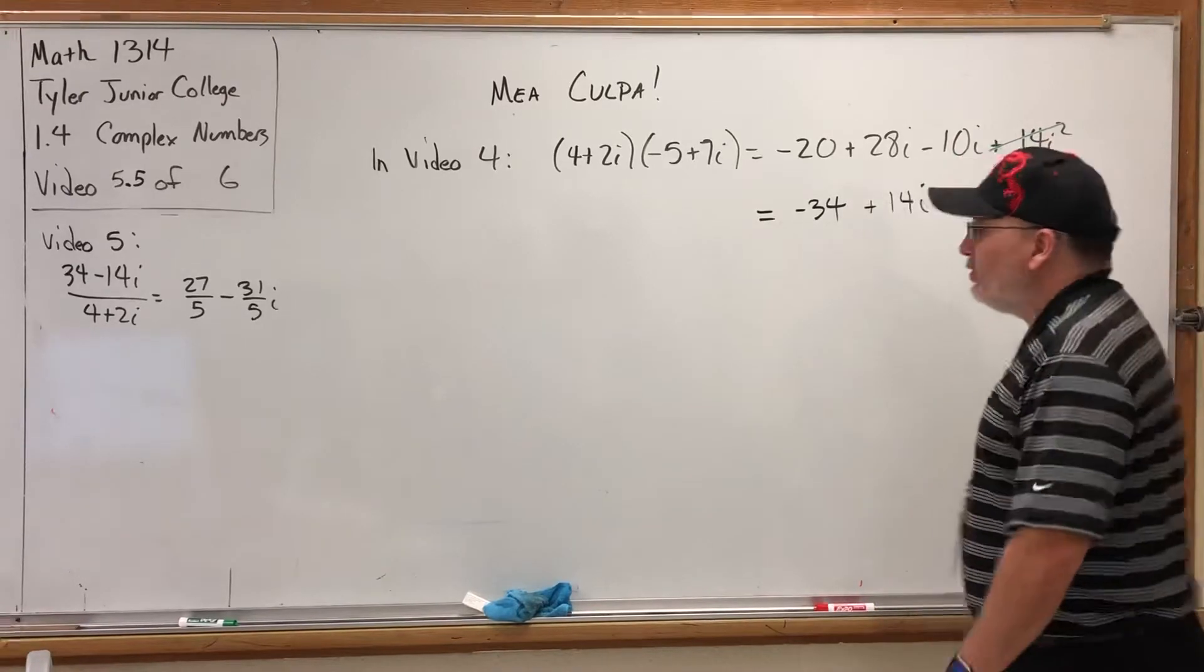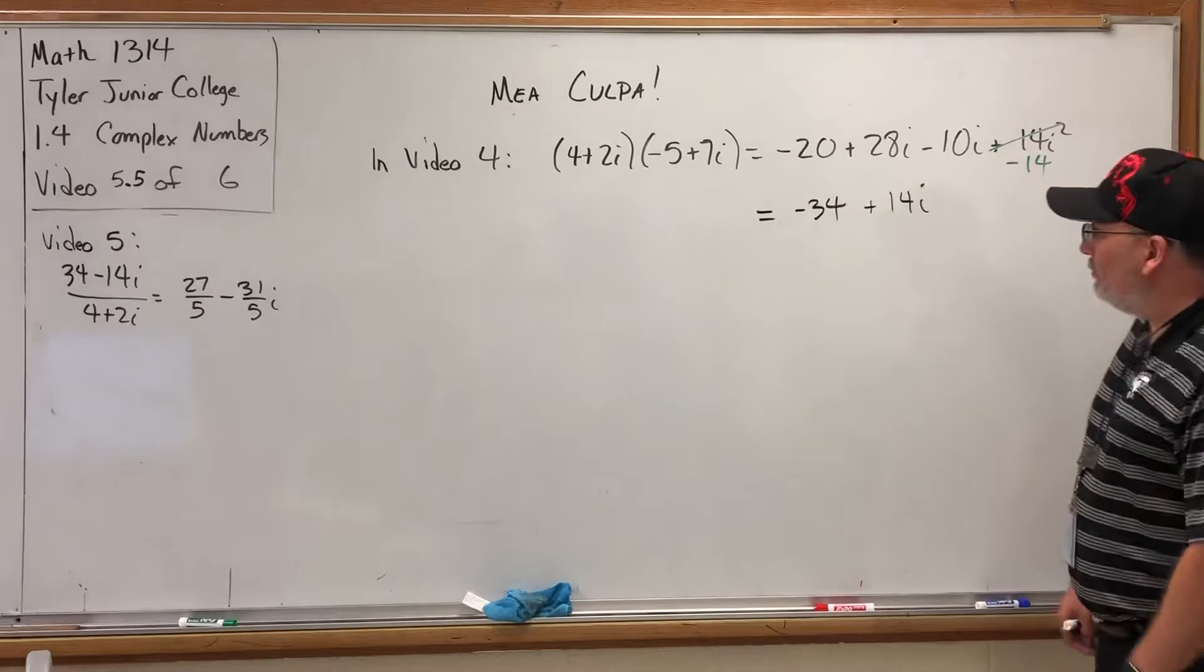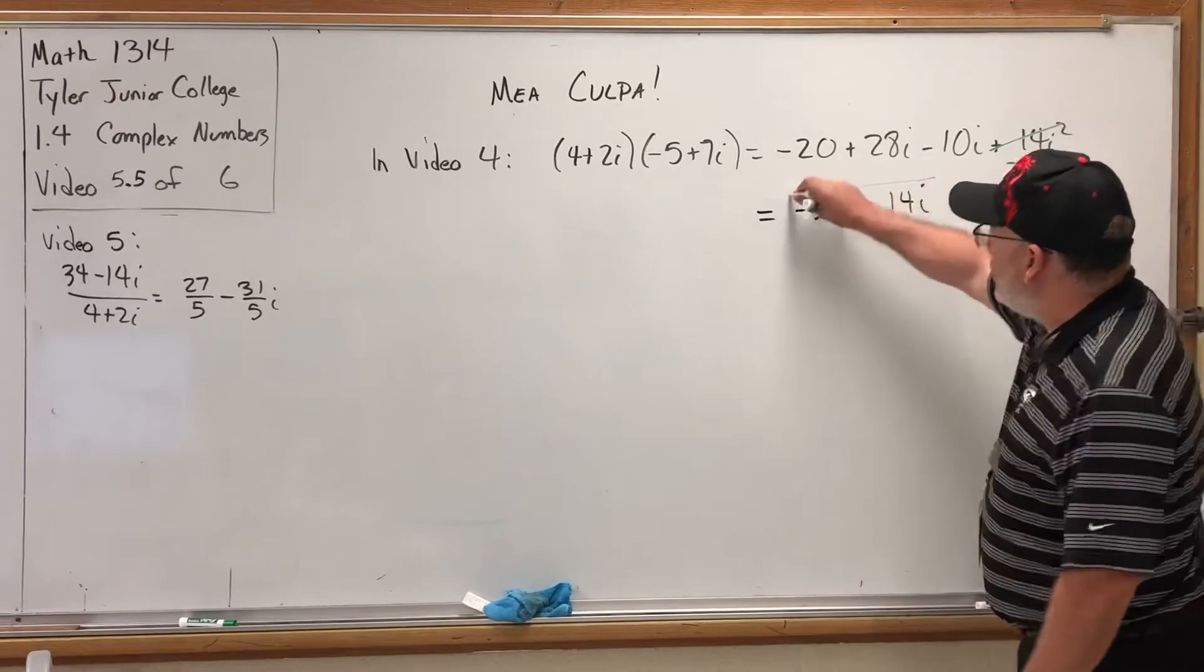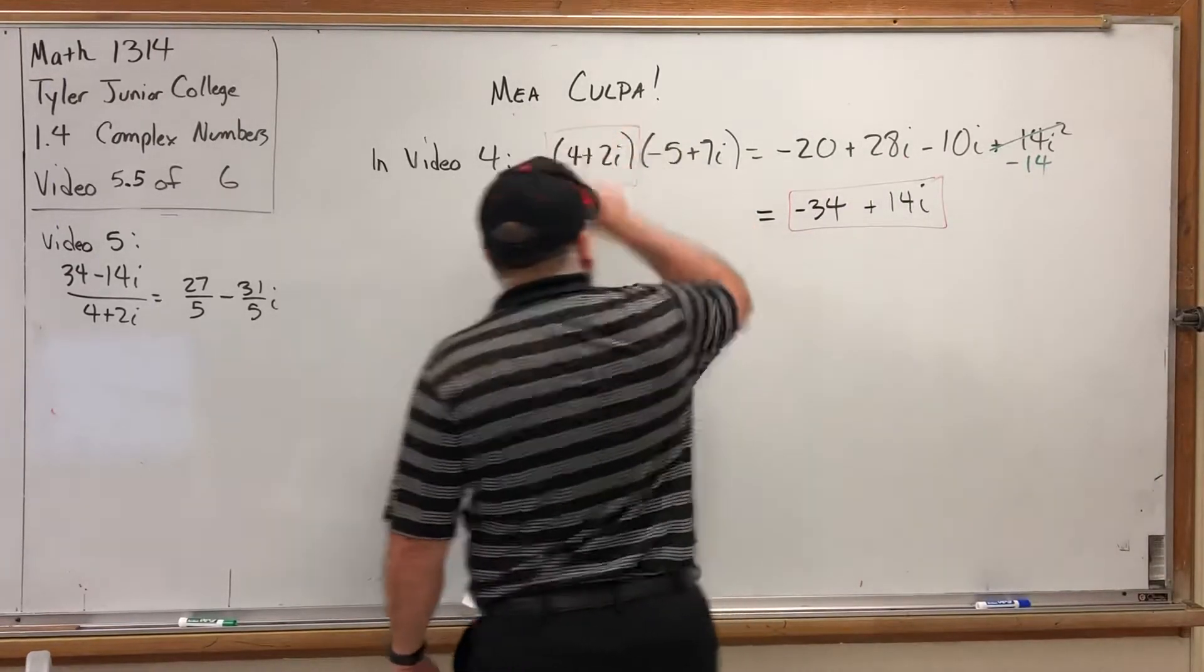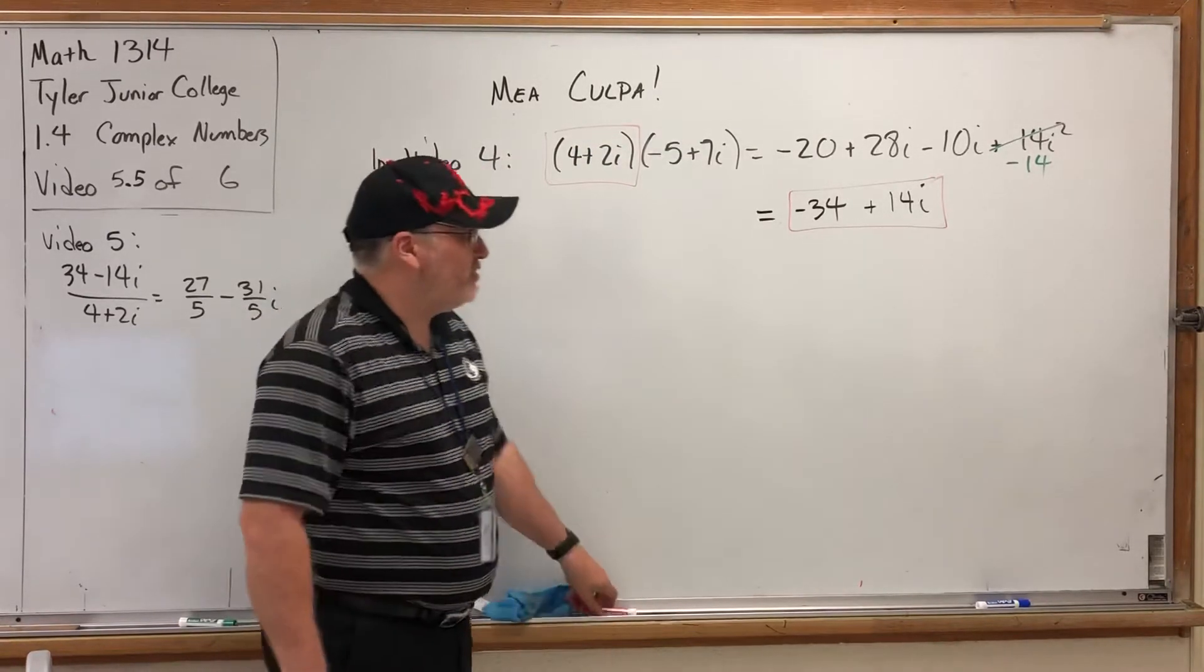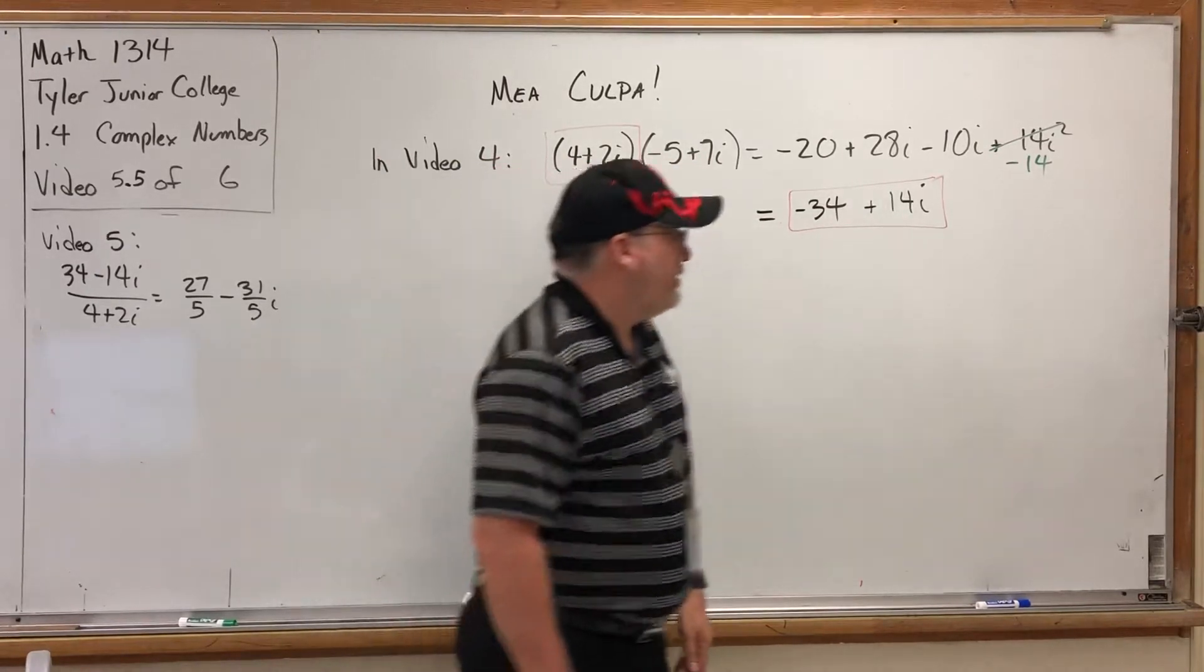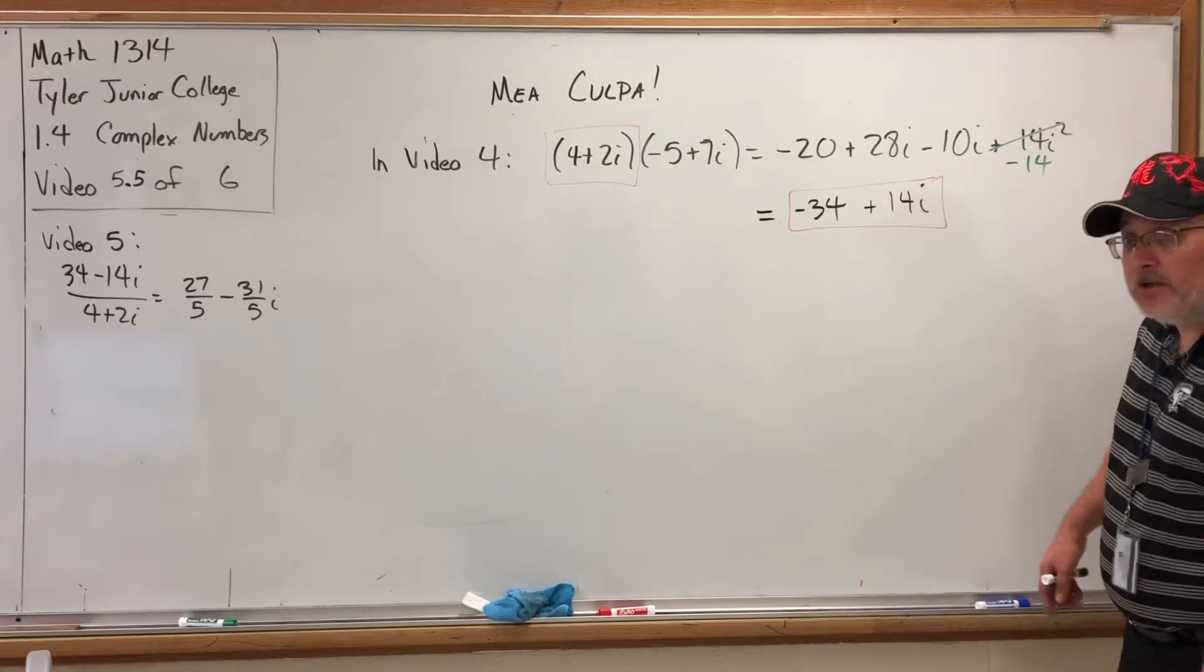So how did this impact the division problem? Because when I set up video 5, my plan was to take this quotient, divide it by this, which should have given me this back. And then I thought, well I want it to be a little bit different so I'll just change the signs, which means I should have gotten 5 - 7i. The problem is this was the incorrect product. What should the correct product have been?